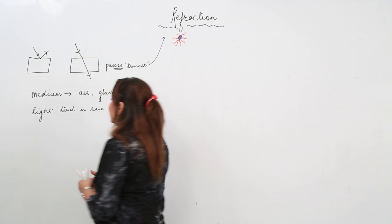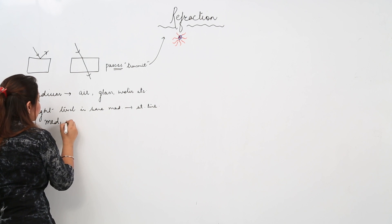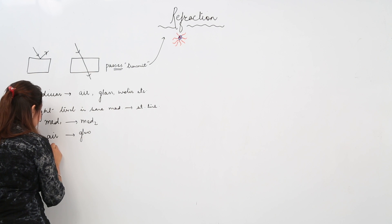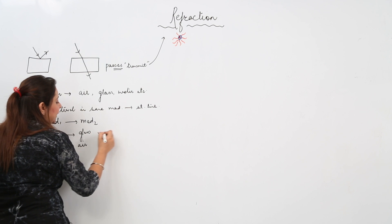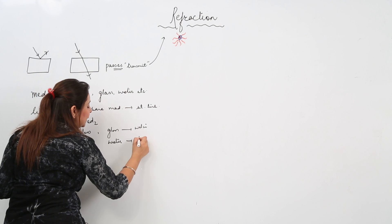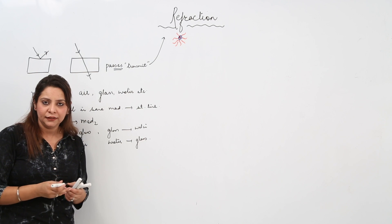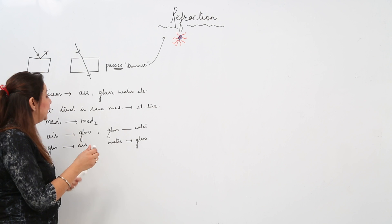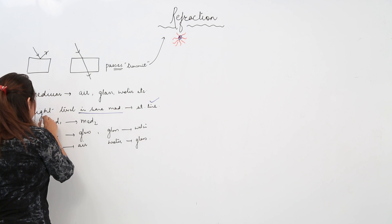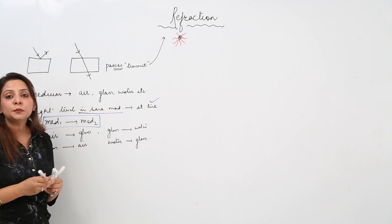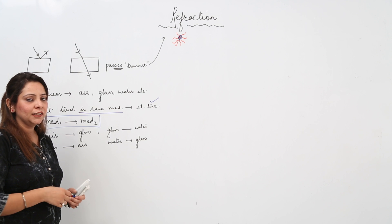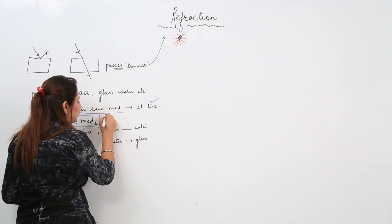But what happens when light passes from one medium to another — like from air to glass, glass to air, glass to water, or water to glass? Then the path of light no longer remains a straight line. When light travels from one medium to another, its path gets bent.